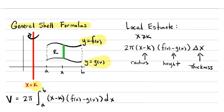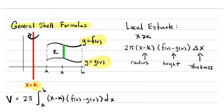If you were going to do such a volume with disks, this particular region would be kind of difficult. With disks, the segment is perpendicular to the axis of rotation, so the local estimate is a disk rather than a cylindrical shell. Given functions of x and rotating around a line parallel to the y-axis, I'd prefer to use shells because the shell integral is with respect to x, and I'm already given things in terms of x — I don't want to have to solve for x in terms of y unless I absolutely have to.